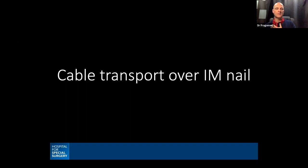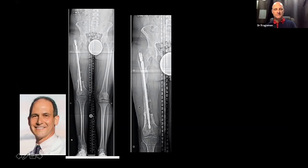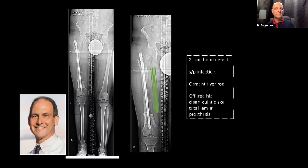Let's come back to cable transport over nail — Rob taught me this technique. Here's a patient of Rob's — a fantastic case. This patient had a tumor resection that was reconstructed with allograft, and the entire allograft failed over time. He was back to having a massive defect of the femur and was told that amputation might be his best option. Then he found Dr. Rosbrook.